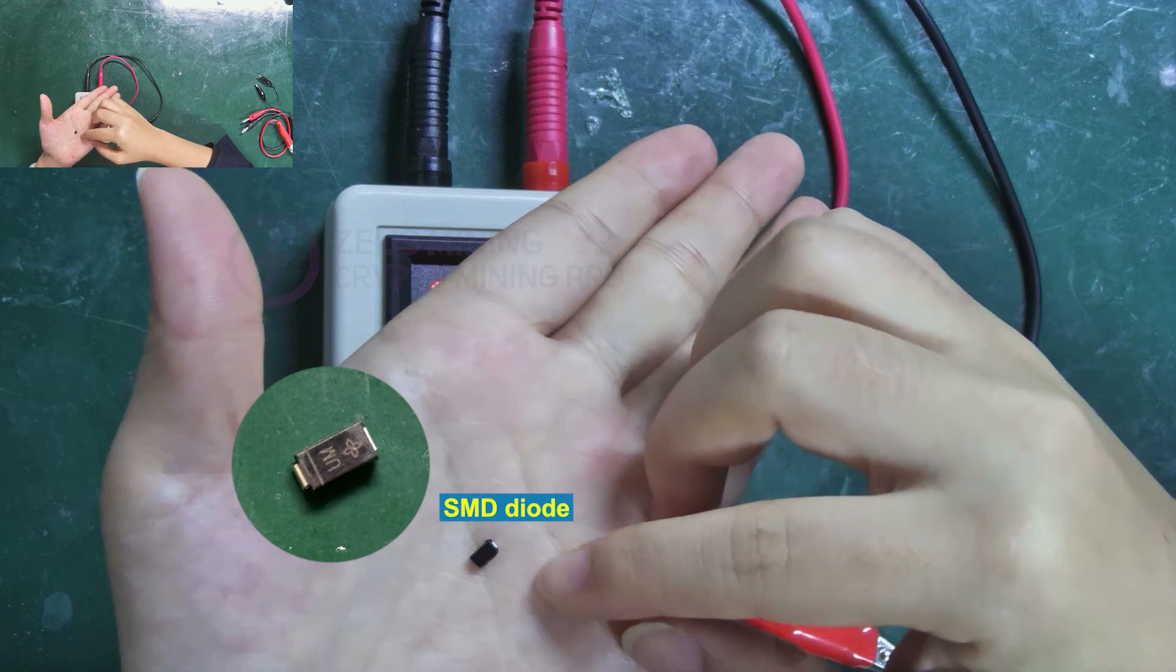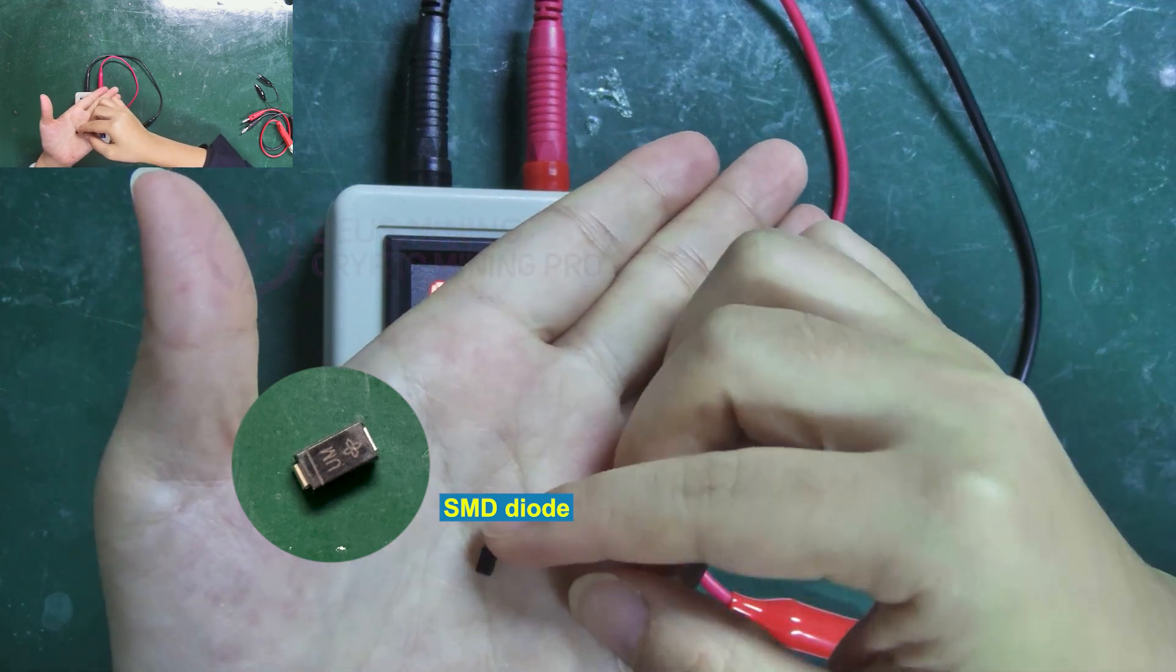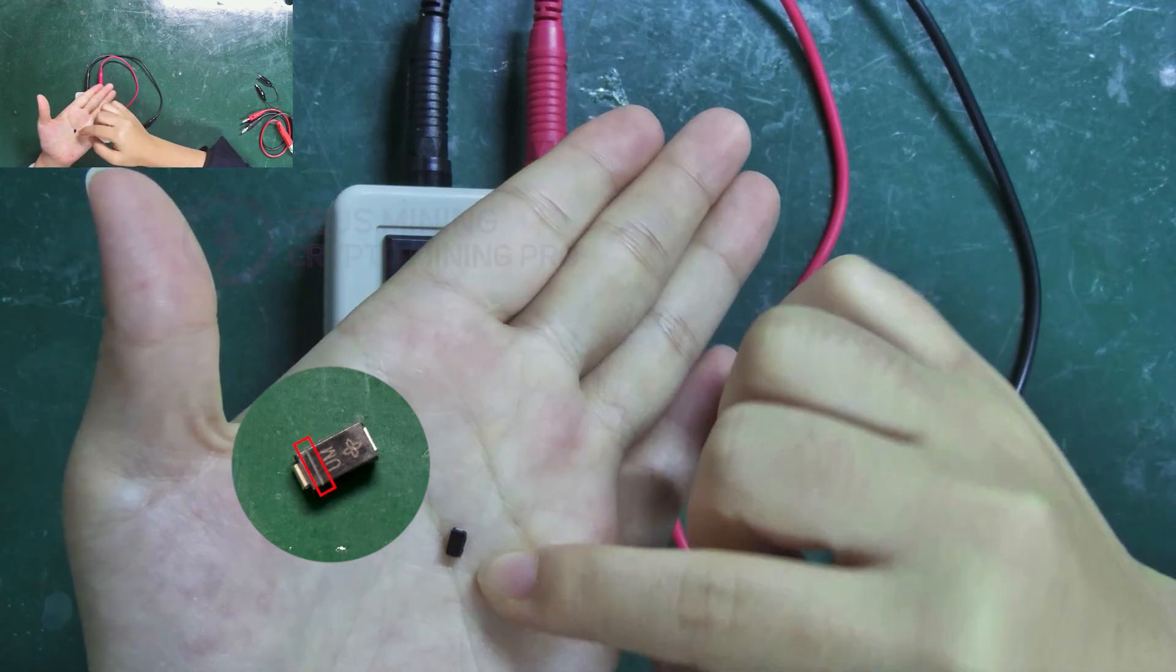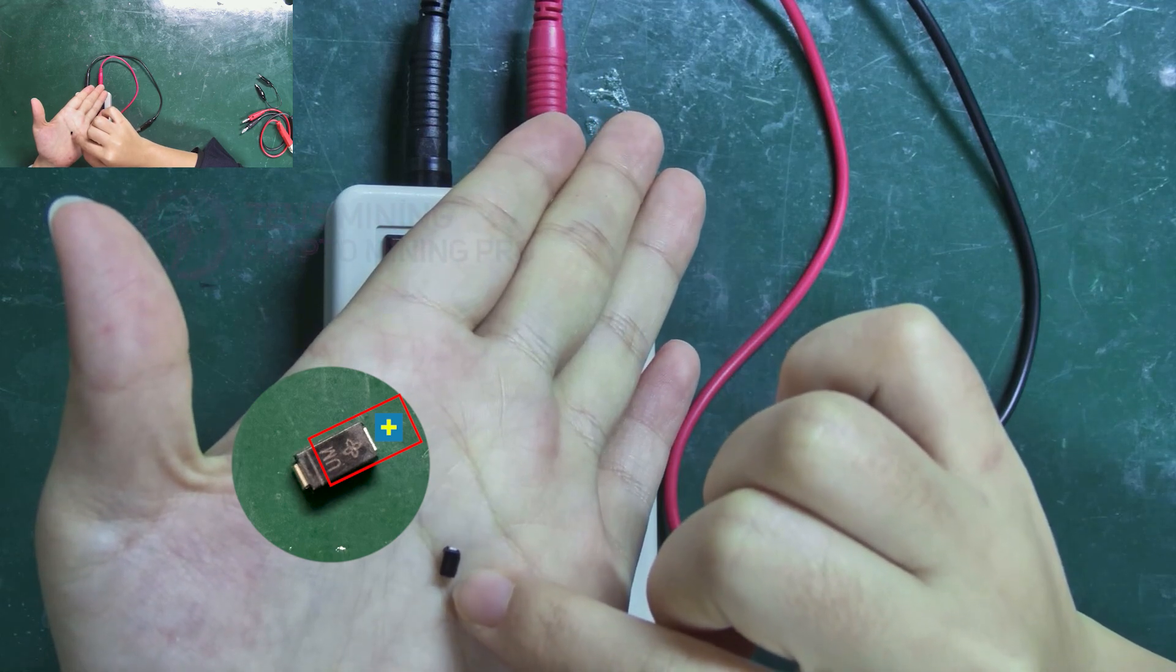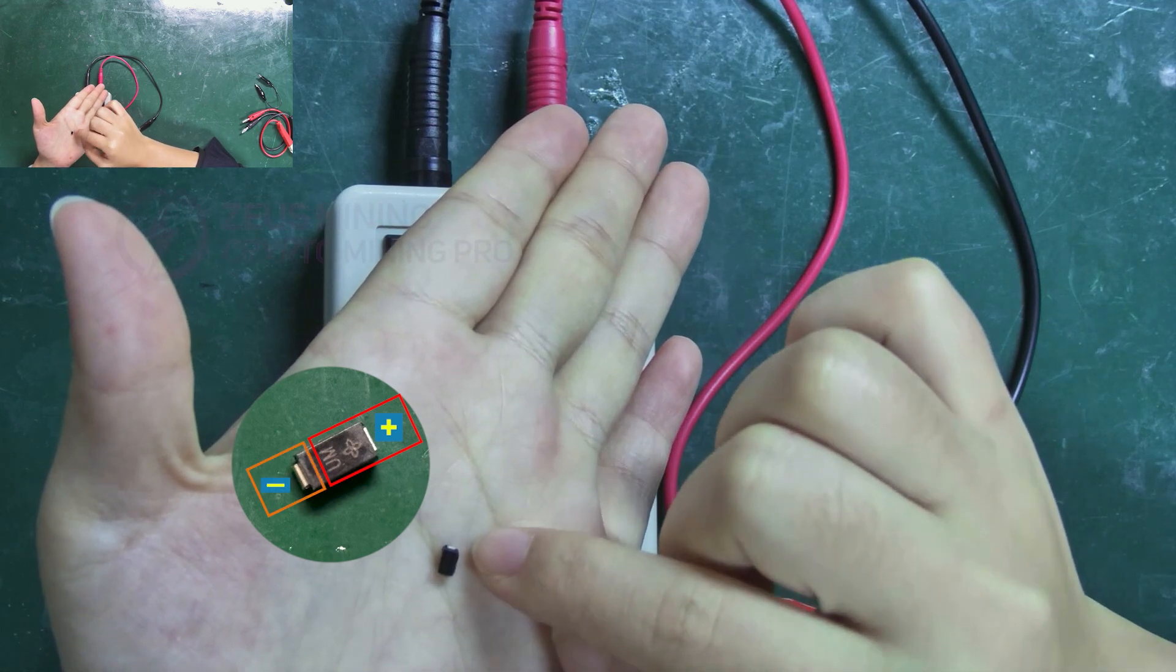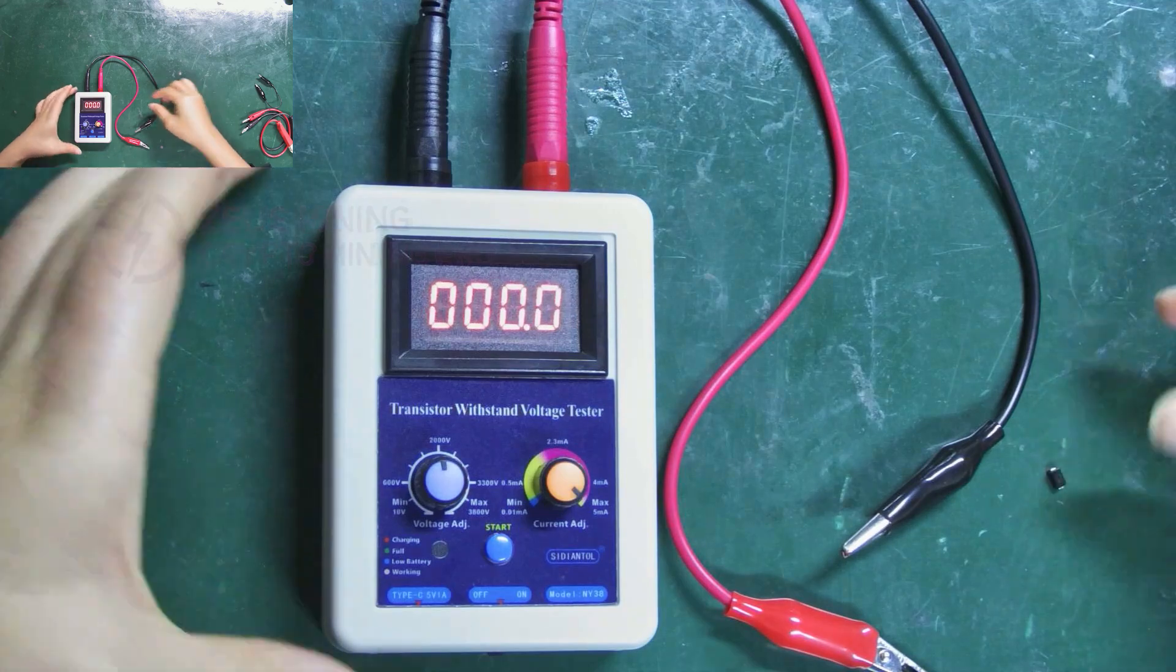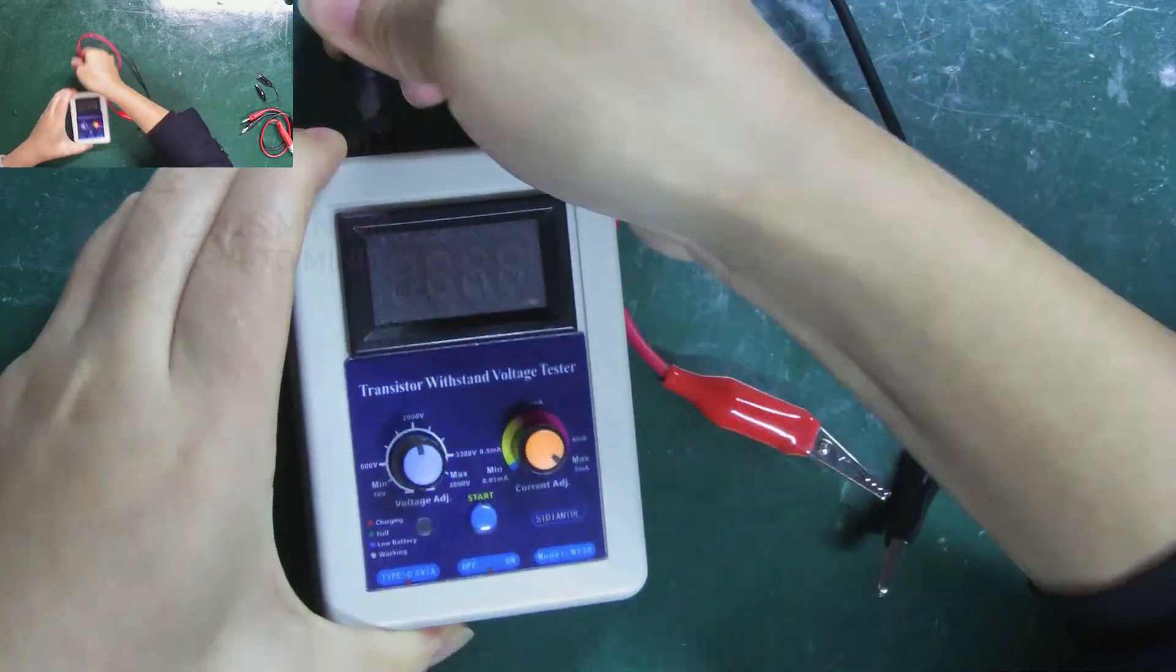Lastly, let's check out this small SMD diode. With this line as the boundary, the part with a larger area is the positive pole, and the other part is the negative pole. We need to replace the test alligator clips.